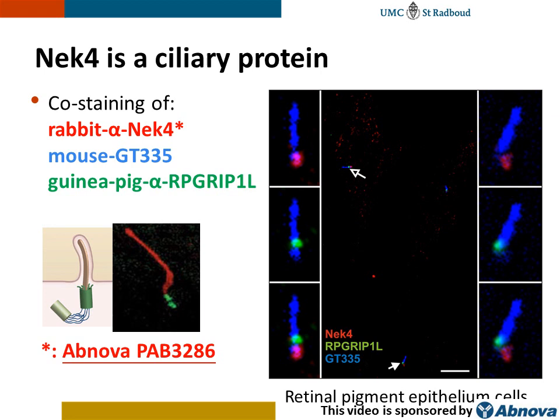We were fortunate that a commercial rabbit polyclonal antibody against NEC4 was available from Abnova. We successfully used this antibody to stain for NEC4 in ciliated cells. In this image, cilia are stained in blue, ARPA-GRIP-1-like is stained in green, and NEC4 is stained in red. You can see that NEC4 specifically localizes at the base of the cilium, just below the transition zone region, where ARPA-GRIP-1-like can be found.